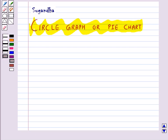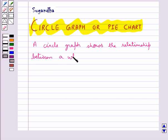We can represent data using a circle graph or pie chart. A circle graph shows the relationship between a whole and its parts. A circle graph is also called a pie chart.